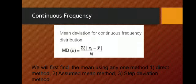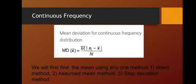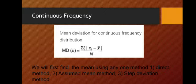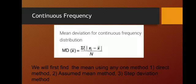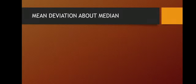In case of continuous frequency, you are going to find the mean using any of the methods you have learned — depending upon the data, maybe the direct method, assumed mean method, or step deviation method. After finding the mean by any of these methods in case of continuous frequency, you are going to use the same formula to find the mean deviation.